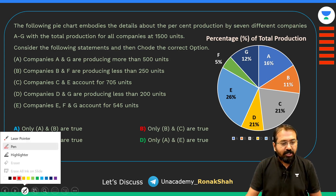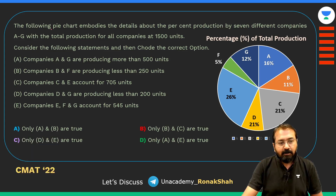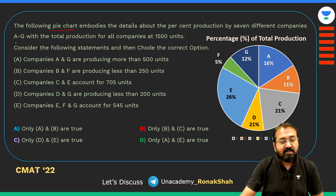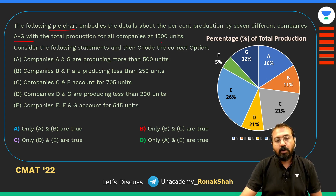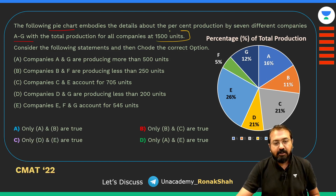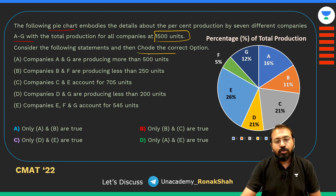Here is the first question which I felt was ambiguous. You are given a pie chart showing the percent production of seven different companies A to G, with total production for all companies at 1500 units. Now consider the following statements and choose the correct option.